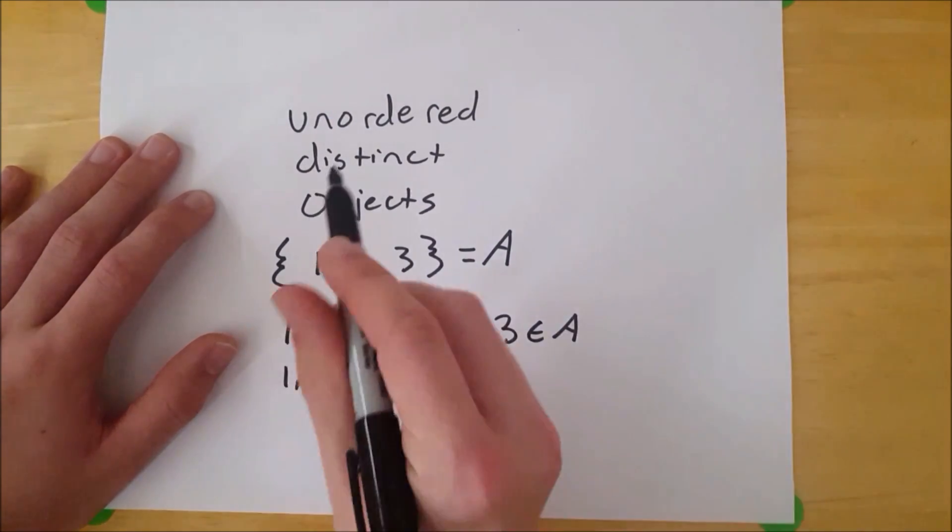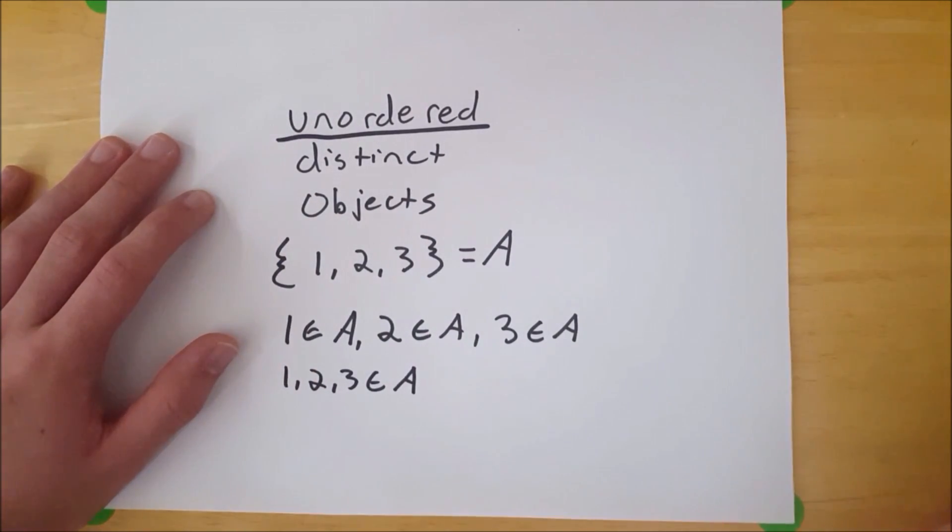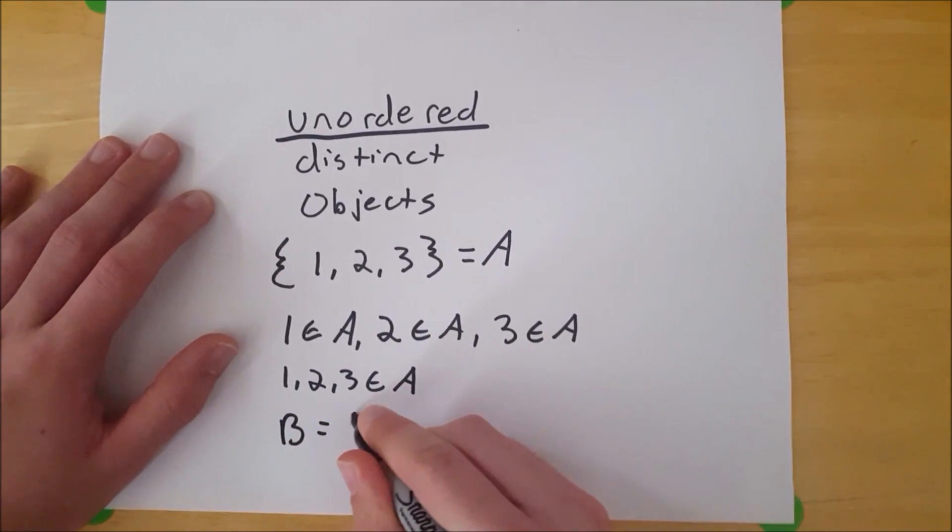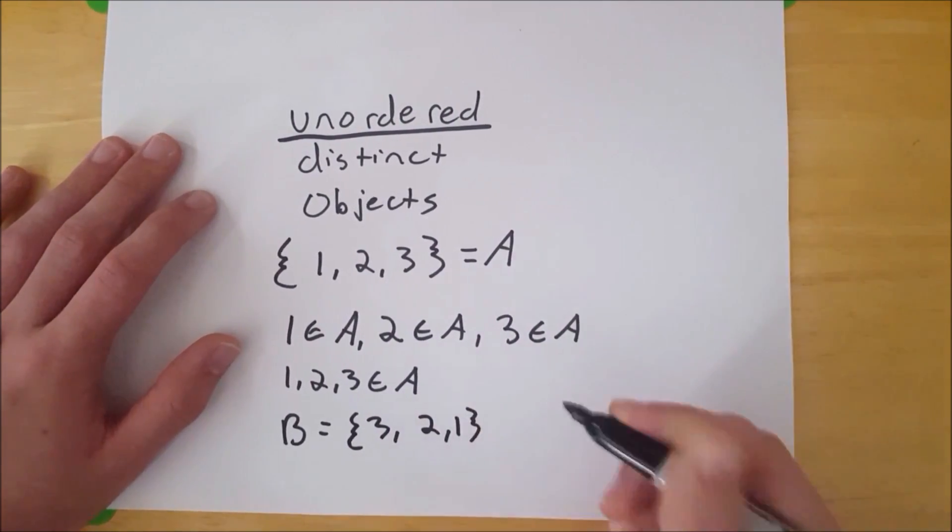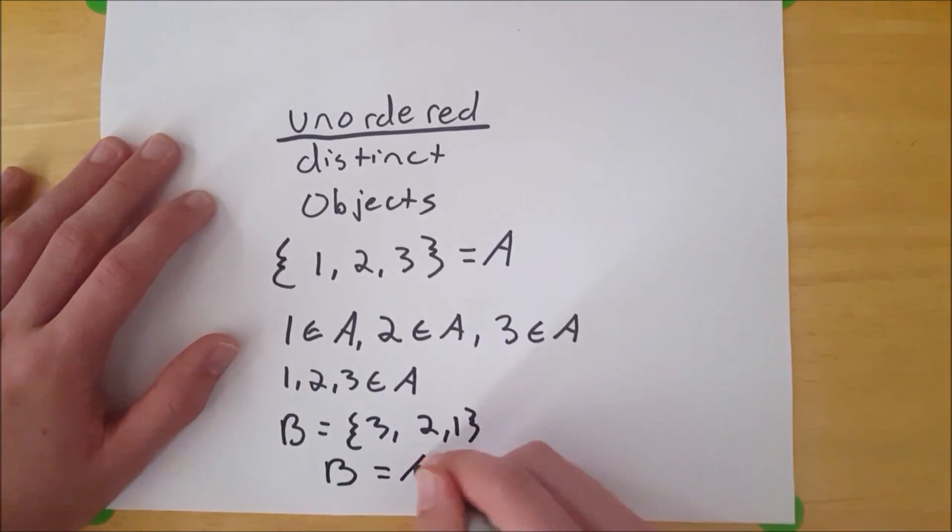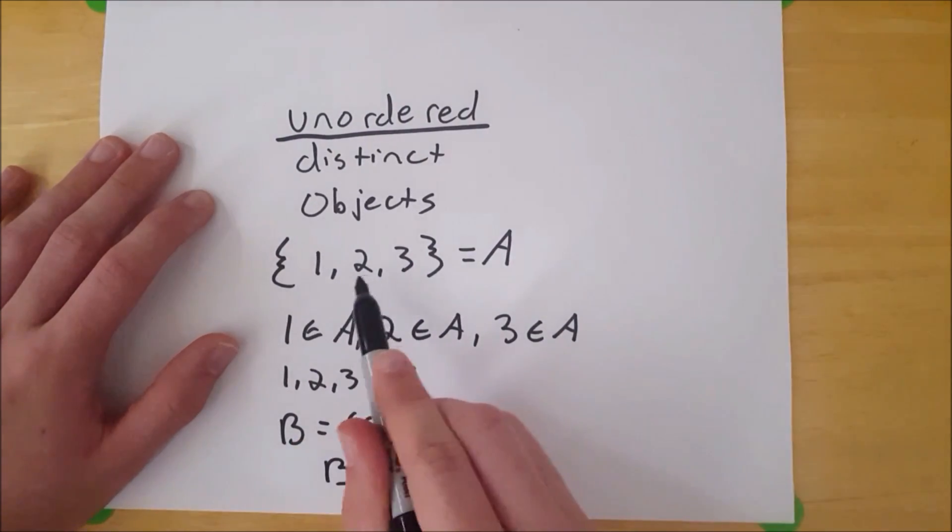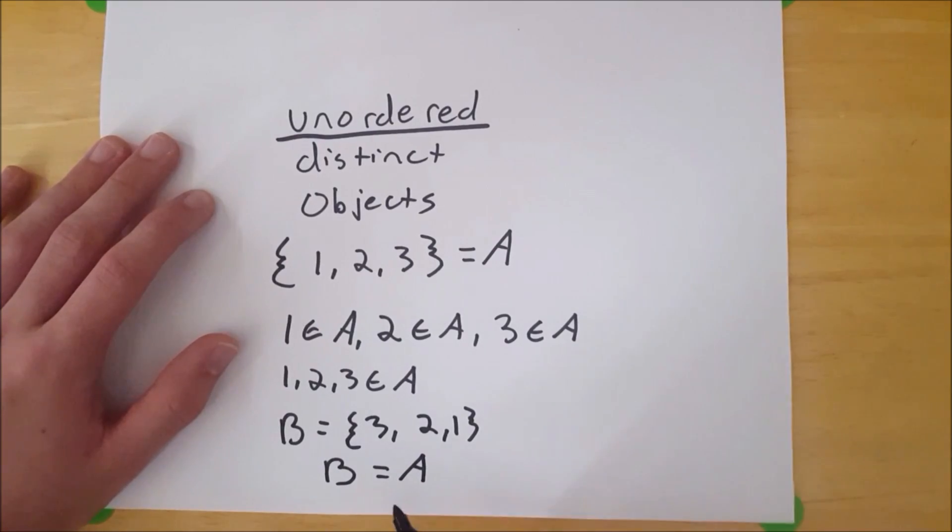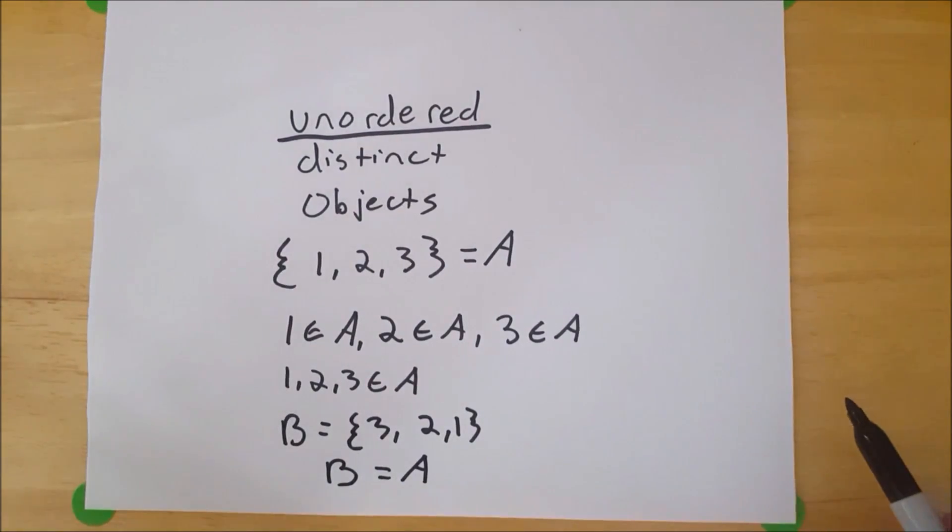Now let's talk about these three keywords. The first one is unordered. And what does that mean? Well, suppose we have another set, set B, which equals the set that contains three, two, and one. B is equal to A, because B and A all have the same elements: one, two, three. And it doesn't matter that B has them in the opposite order. And naturally, that's what unordered means.